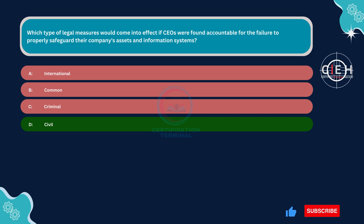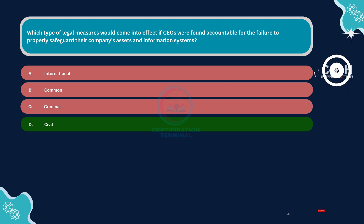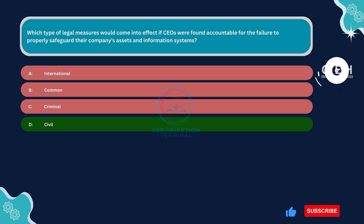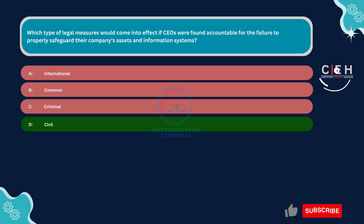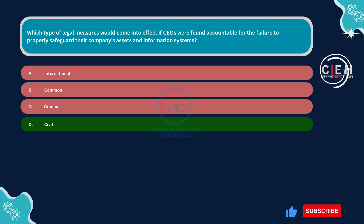Option C, criminal, is incorrect. Criminal legal measures involve the prosecution and punishment of individuals or entities for violations of criminal statutes. While criminal charges could potentially arise in cases of severe negligence or intentional misconduct leading to harm or loss of company assets, they are not the primary legal measures that would come into effect in response to CEO accountability for cybersecurity failures. Therefore, this option is incorrect.